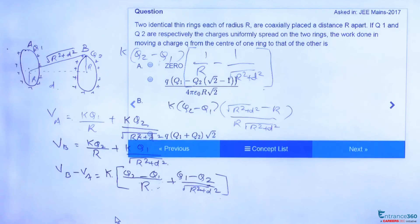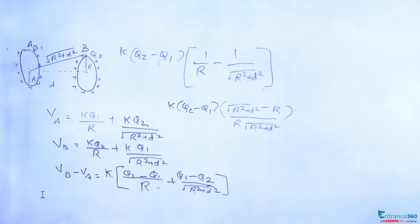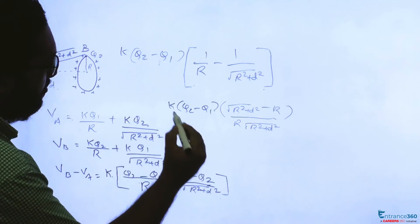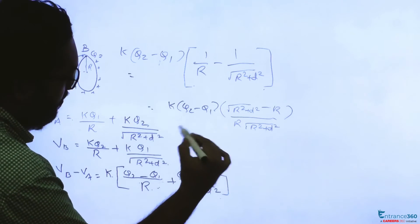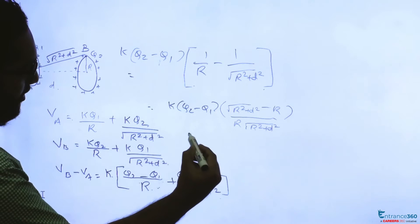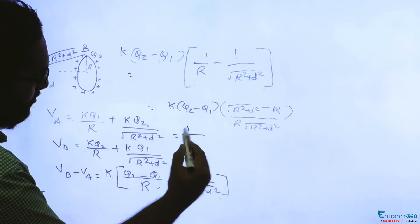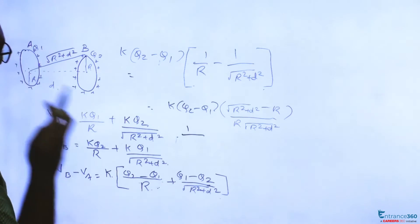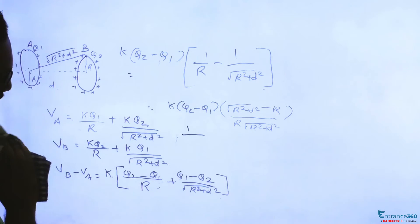So in question it says that distance of separation is R, so for D we can substitute here R.